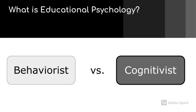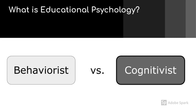Cognitivists also focus on the learning process and outcomes on the way to outcome performance, looking at the influence of instruction in the memory processes of attention and coding retrieval, and how these processes result in the new knowledge that is demonstrated by performance. We will be focusing largely on the cognitivist viewpoint throughout this course.